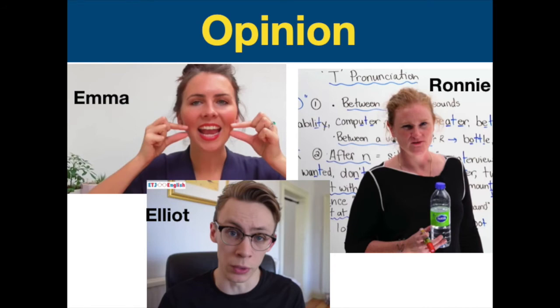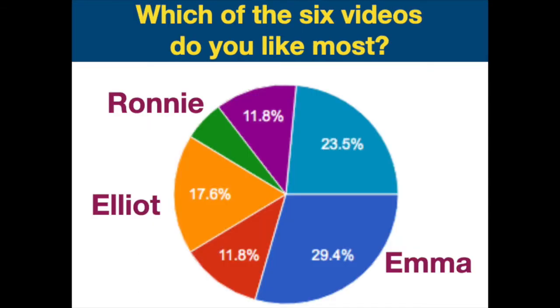As we thought, our video number one, which was Emma, and video number six, which we haven't shown you, were the two most popular videos — you can see them in blue. And Ronnie was the least popular — she only had one person who liked her the most. So that wasn't that surprising.